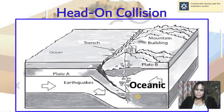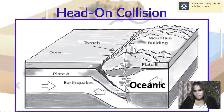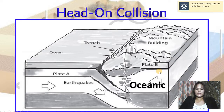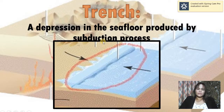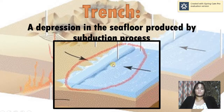So we have here the subduction, and then we have also the formation of the trench and mountain building above plate B. These are the products and consequences of the collision of an oceanic and continental plate. A trench is a depression in the seafloor produced by a subduction process.